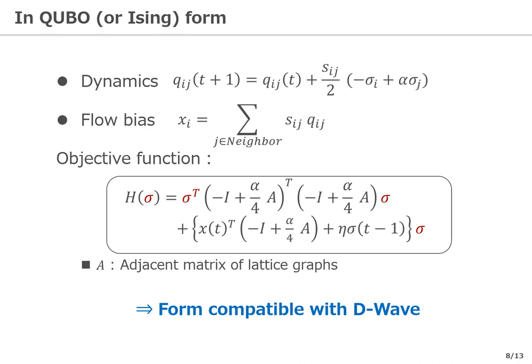By transforming the evaluation function using these equations, it can be expressed as a formula where the evaluation function includes up to a quadratic term for the variable sigma. Sigma takes a binary value of minus 1 or 1, and there is no constraint on itself. This is exactly the Ising model and equivalent to the QUBO model. Therefore, quantum annealing machines like D-Wave can solve this optimal control problem.